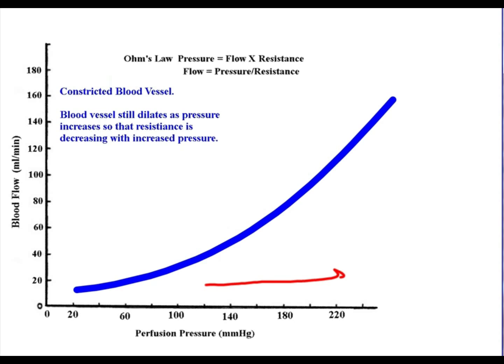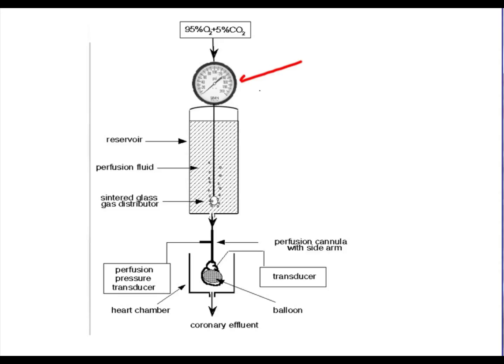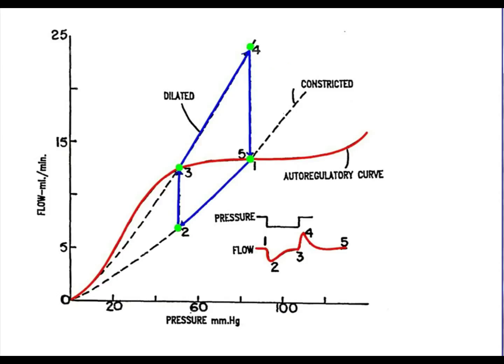In order to do these studies, the investigators had to have a system that allowed a controlled pressure forcing the perfusate — either blood or a lactated Ringer's solution — into the tissue. This shows a heart being perfused while measuring how much blood is coming out. They can change the pressure, and the heart then changes resistance by dilating or constricting, which changes the flow.